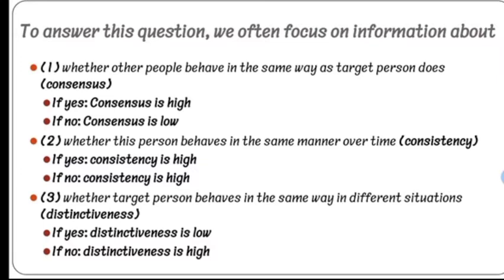Consistency refers to whether the target person behaves in the same way across regular occurrences. If the answer is yes, consistency is high; if no, consistency is low. Distinctiveness refers to whether the target person behaves the same way across different situations. If they behave the same way in all situations, distinctiveness is low; if they can differ across situations, distinctiveness is high.